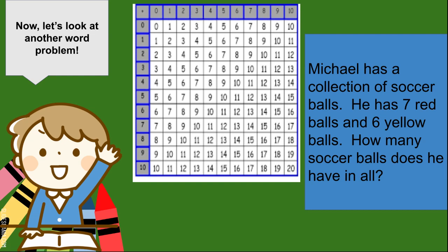Now, let's look at another word problem. Michael has a collection of soccer balls. He has 7 red balls and 6 yellow balls. How many soccer balls does he have in all? Pause the video and let's see what you can do.